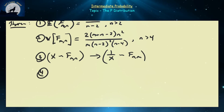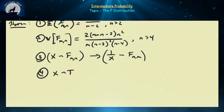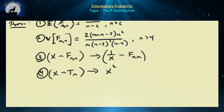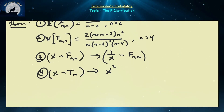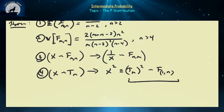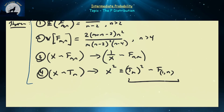The last identity links the T and F distributions. If X follows a T(N) distribution and you square it, X² follows an F(1, N) distribution. This makes sense because chi-squared is just a standard normal squared, and T is similar to a standard normal with fatter tails. So a T-squared distribution is just an F distribution in disguise.